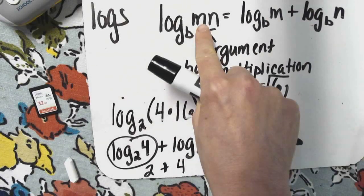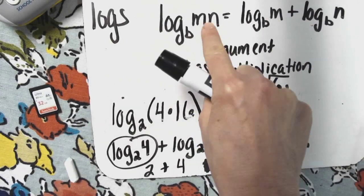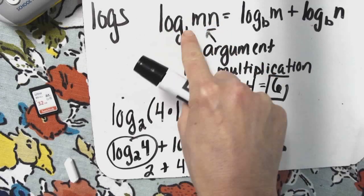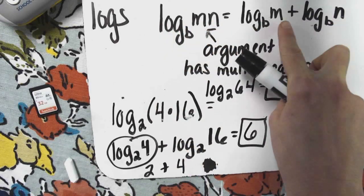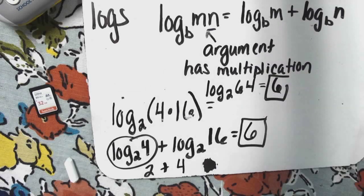So you can see how that works. So again, if you have multiplication in the argument of a single log, you can write it as separate logs where you're adding them together.